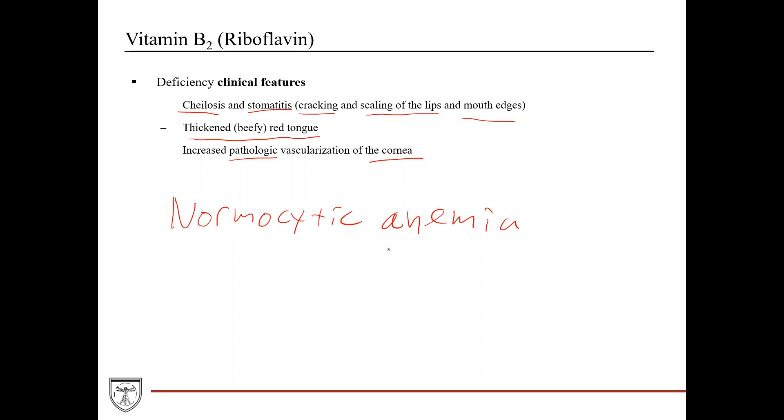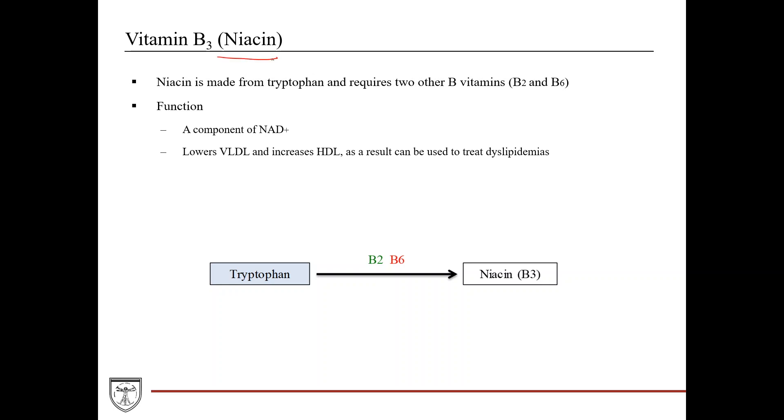Vitamin B3, also known as niacin, is made from tryptophan. It requires two other B vitamins, B2 and B6. Your tryptophan, using these as cofactors, gets converted into niacin. Functionally, it's a component of NAD plus, which makes it very important because NAD plus is a critical component of so many different metabolic reactions throughout the body. It also has a therapeutic effect where it lowers VLDL and increases HDL, and it can be used clinically to treat dyslipidemias.